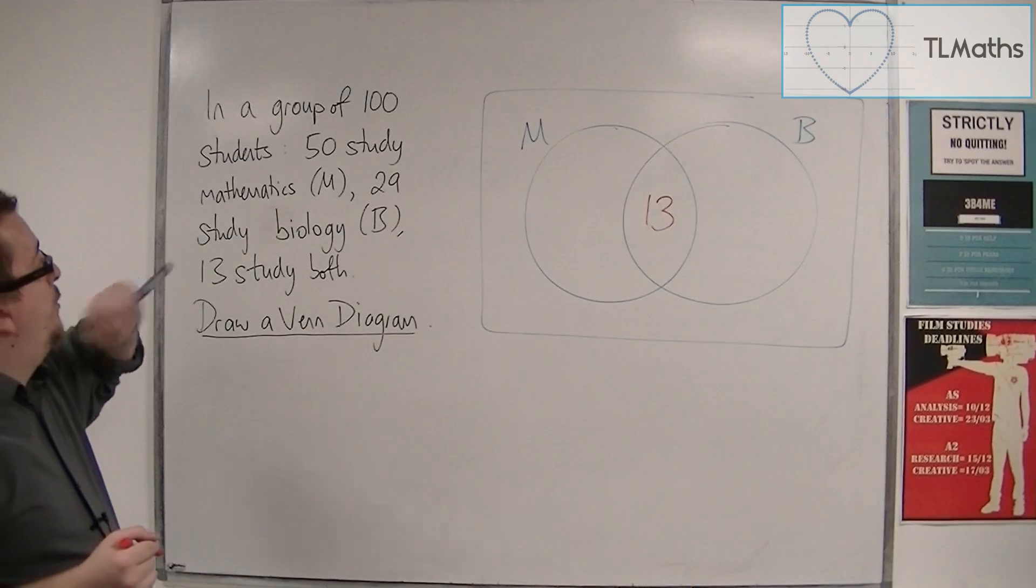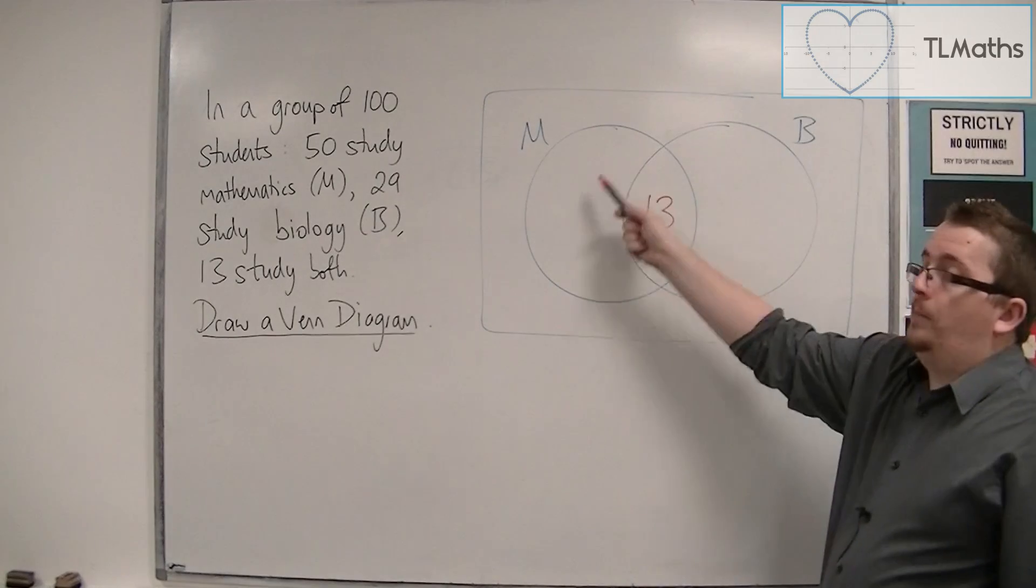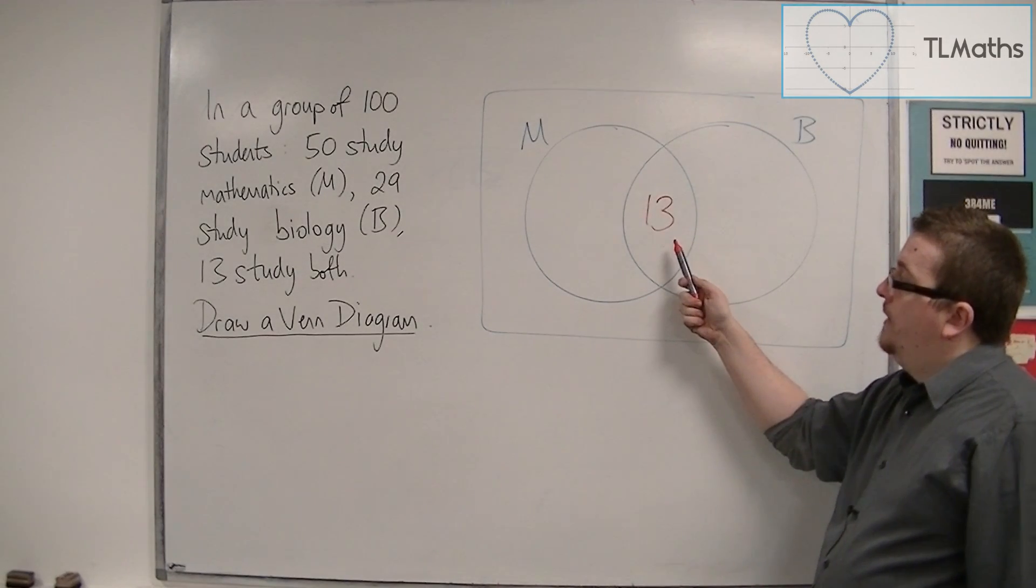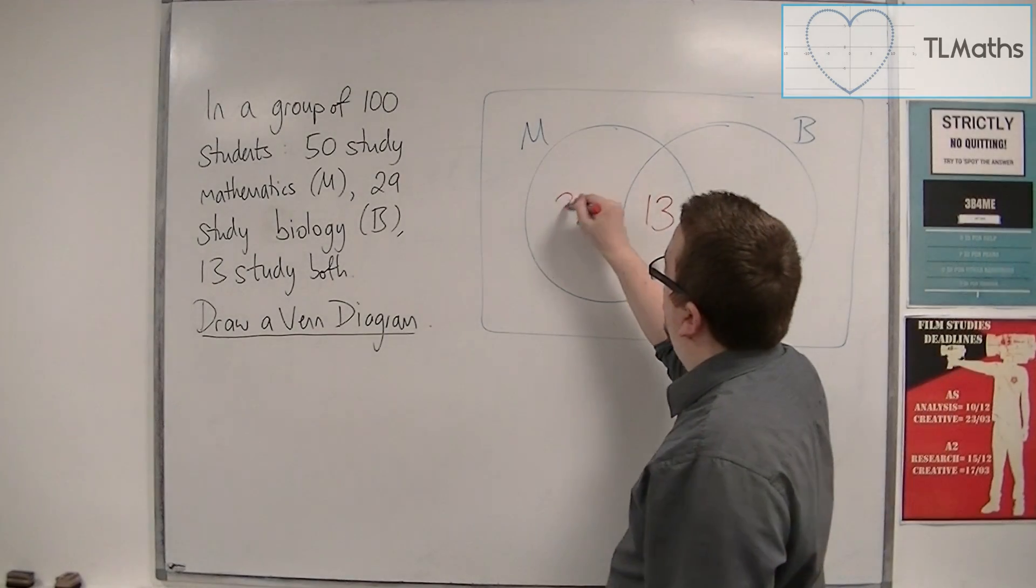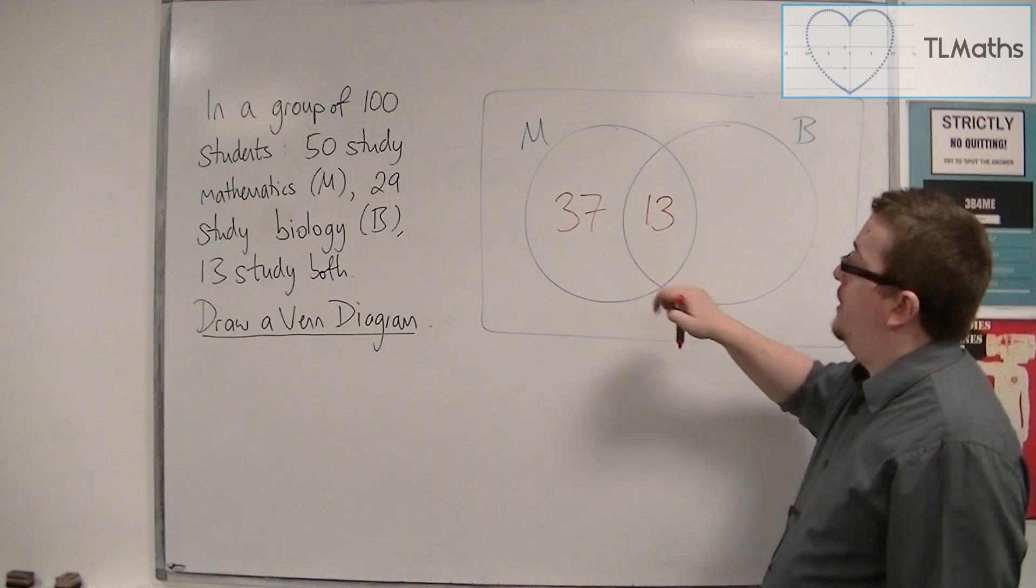Then we also know that 50 study maths, and so this circle must add up to 50. So we've got 13 there already, and so we'd have to have 37 there in order for those two to add up to 50.